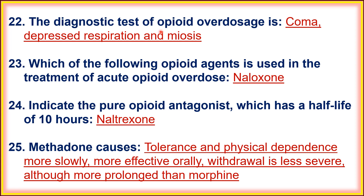Twenty-second, the diagnostic triad of opioid overdose is coma, depressed respiration, and miosis. If someone has opioid toxicity or has taken a high dose of morphine, miosis and depressed respiration are the signs of opioid overdose. Twenty-third, which opioid agent is used in the treatment of acute overdose? Naloxone. Naloxone is used for acute opioid overdose.